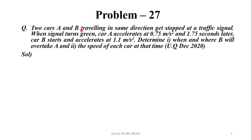Two cars A and B travelling in the same direction get stopped at a traffic signal. When the signal turns green, car A accelerates at 0.75 m per second squared. 1.75 seconds later, car B starts and accelerates at 1.1 m per second squared. Determine first: when and where B will overtake A.